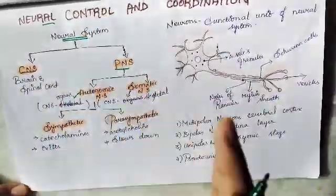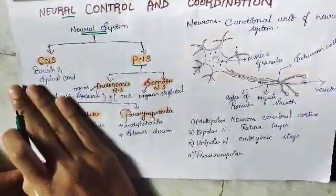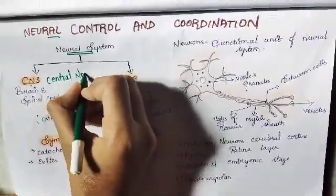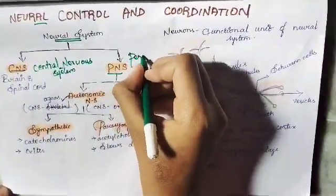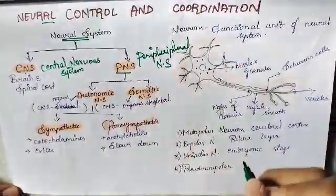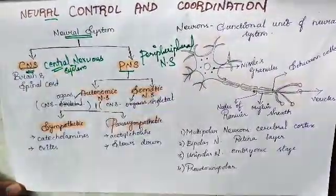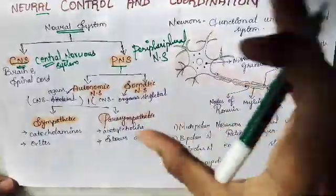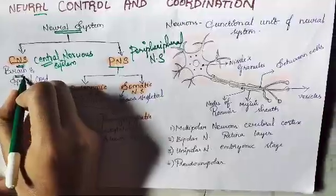Our neural system is more complex. We will read the basics now. The neural system is divided into the central nervous system and the peripheral nervous system.